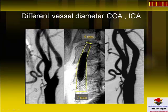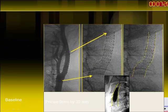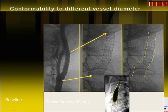With different vessel diameters, you get a lot of discrepancy, and here nitinol has an advantage — for example, expanding to 7mm in the common carotid while only expanding to 4mm in the internal carotid.